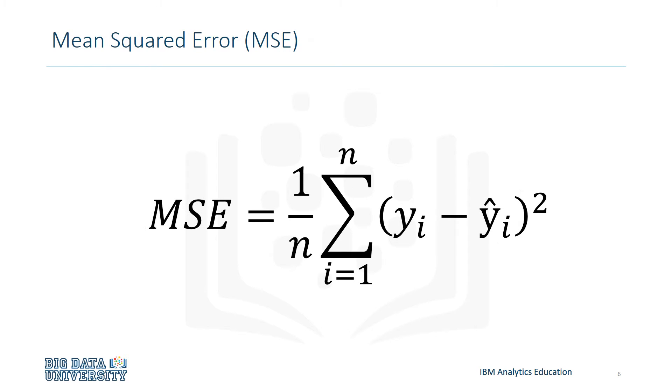As the name states, mean squared error is the mean of the squared error, and is shown here. It's more popular than mean absolute error because the focus is geared more towards large errors. This is due to the squared term exponentially increasing larger errors in comparison to smaller ones.